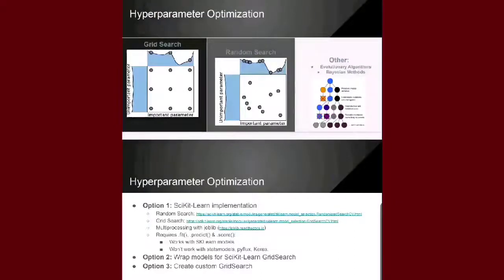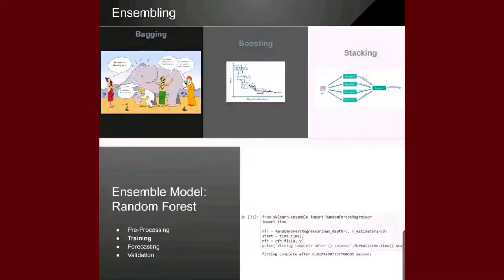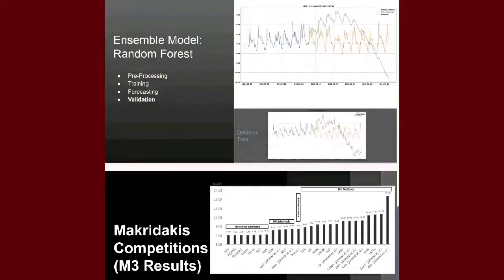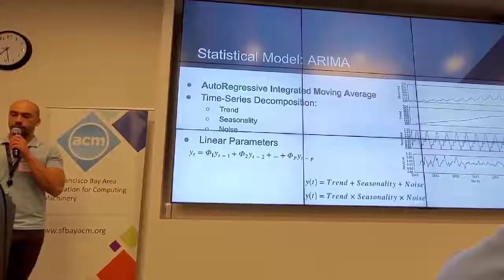Time series is mostly used to predict future behaviors using past data points ordered in time. In a time series, time is often the independent variable and the goal is usually to make a future forecast. However, there are other factors to consider, and common questions we should ask before doing such predictions include understanding the characteristics of the time series.